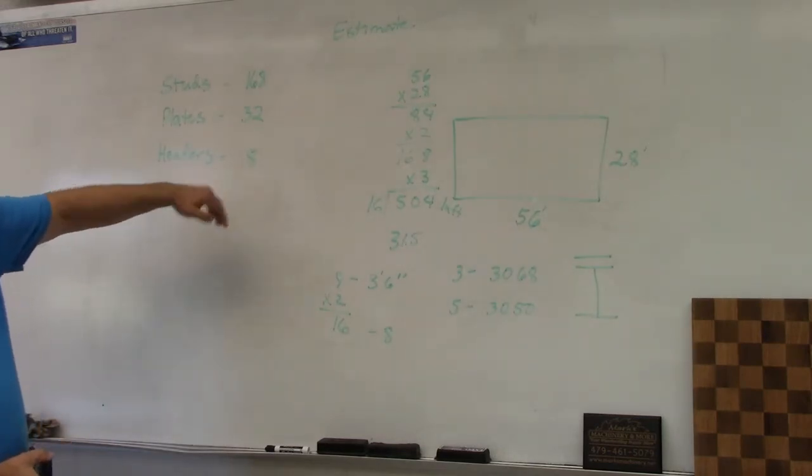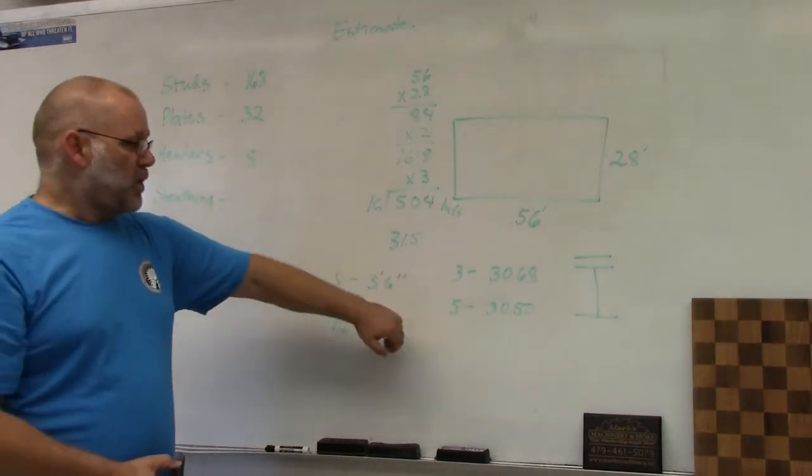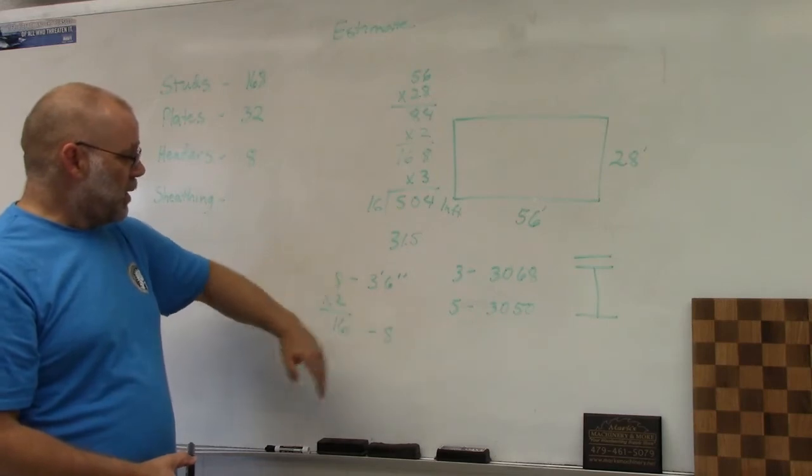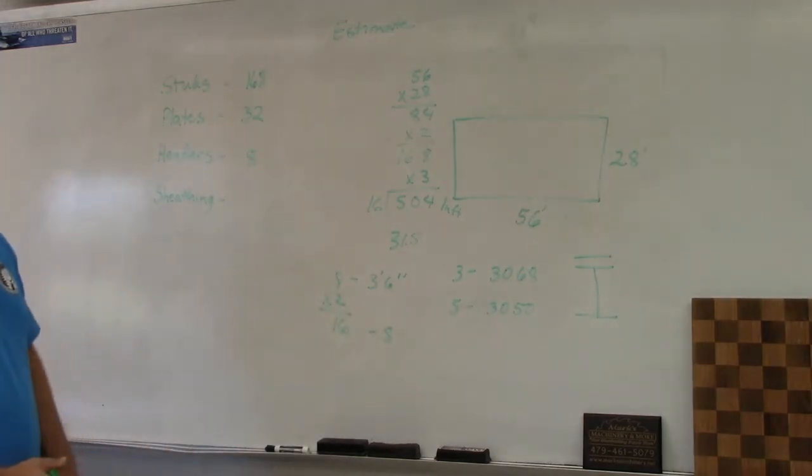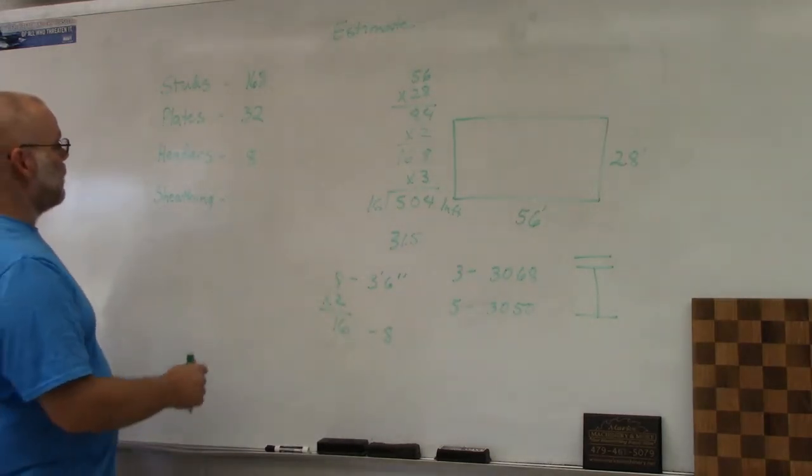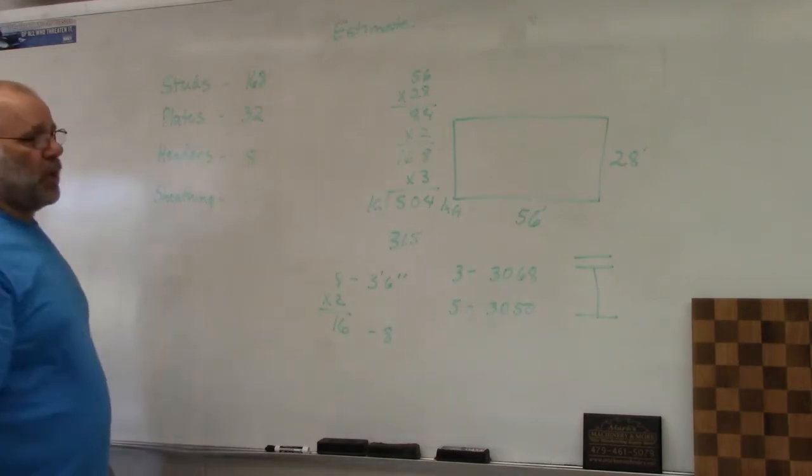It all depends on what you're making the header out of, but in this circumstance I made them all out of two by 12s. That's basically how you do the header materials: figure out how many pieces you need, what length they are, and then divide them up by the length of lumber that you want to buy.